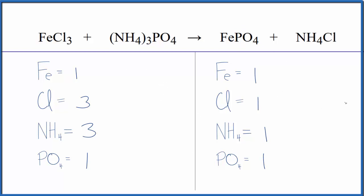Looks like we could balance the chlorines first. We could put a three in front of the ammonium chloride. We have one chlorine times three, that'll give us three of those, that's balanced. And then we have our ammonium ion times three, that gives us three ammonium ions, those are balanced, and actually this equation is balanced.